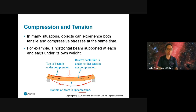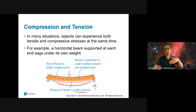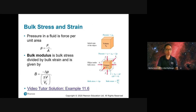Tension means the length of the object is larger than its original length, while compression means the length is smaller. For bulk stress and strain, we consider the volume rather than just the area. The bulk stress is related to pressure, defined as force over area, considering the amount of force applied divided by the area.